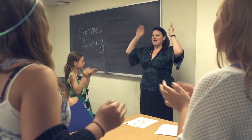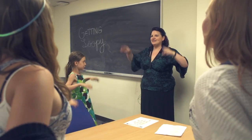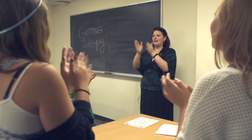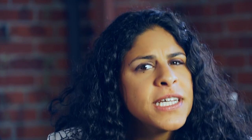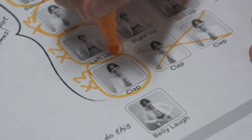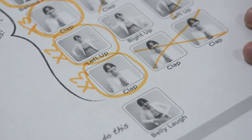Pretty simple, right? Head, waist, head, waist, clap, clap, clap. Do you see how some steps are repeated, such as clap, clap, clap? That's a loop.